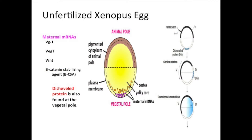Before fertilization, the egg has a clear polarity. The animal half of the egg is pigmented, contains the egg nucleus, and will give rise to ectoderm. The vegetal half contains the egg yolk and gives rise to the endoderm. The Wnt pathway protein disheveled is found at the vegetal pole prior to fertilization. It is a competitor for beta-catenin stabilizing agents that specifies the dorsal-ventral axis. Its localization changes during cortical rotation, going from vegetal to future dorsal.